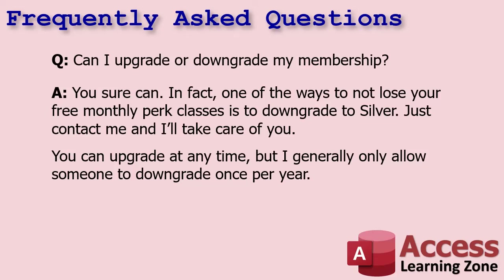Can I upgrade or downgrade my membership? Sure. One way to not lose your free monthly perk classes is to downgrade to Silver. For example, Platinum members with seasonal businesses who won't have time to watch videos all summer can downgrade to Silver to keep from losing their perks, then bring it back up to Platinum when they're ready to resume their studies. You can upgrade at any time, but I generally only allow someone to downgrade once a year — I don't want people upgrading for one month, getting their free class, then downgrading and repeating that cycle.